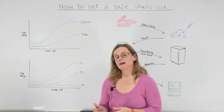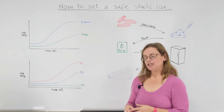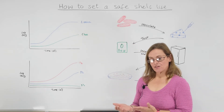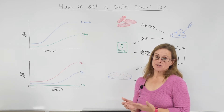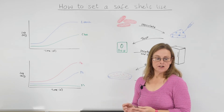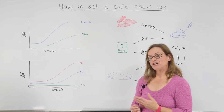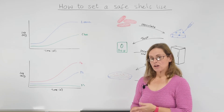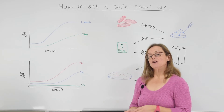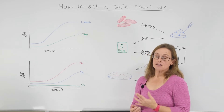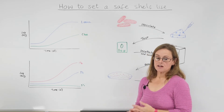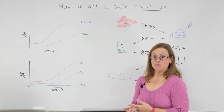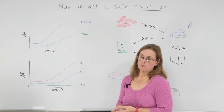So if we're talking about how you actually set a shelf life, there are two approaches that can be taken. One of which is where you look at the quality aspects, so you're looking at the sensory properties, chemical properties, and as I mentioned the microbiological properties.